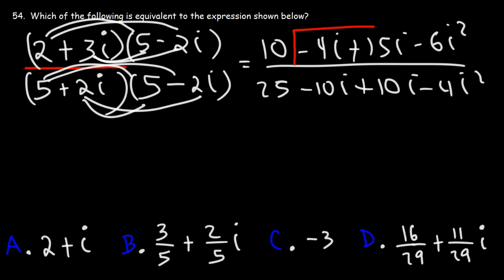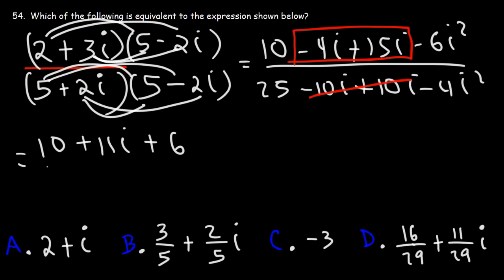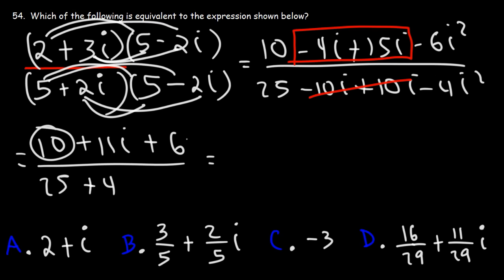Next, let's combine like terms. On the denominator, negative 10i plus 10i will cancel. On the numerator, negative 4i plus 15i is positive 11i. Negative 6i squared: since i squared is negative 1, negative 6 times negative 1 is positive 6. On the denominator, negative 4i squared is negative 4 times negative 1, which is positive 4. So the numerator is 10 plus 6 equals 16, and the denominator is 25 plus 4 equals 29.